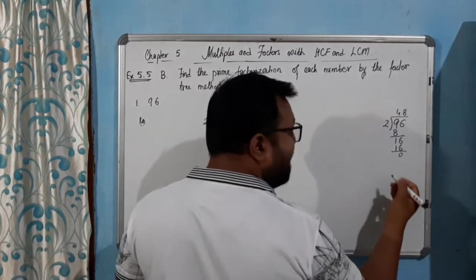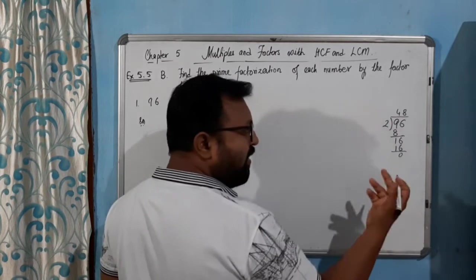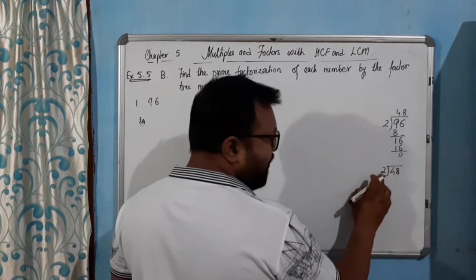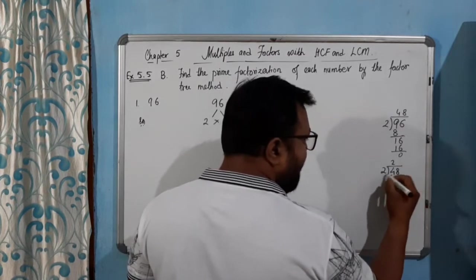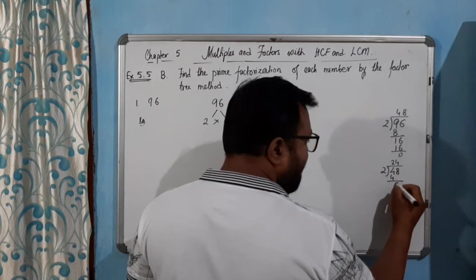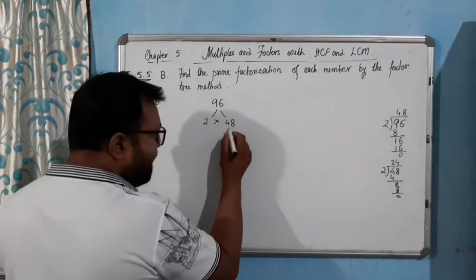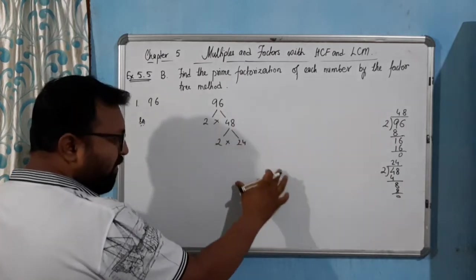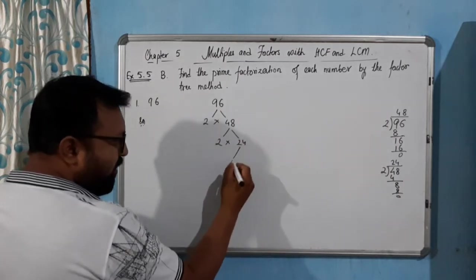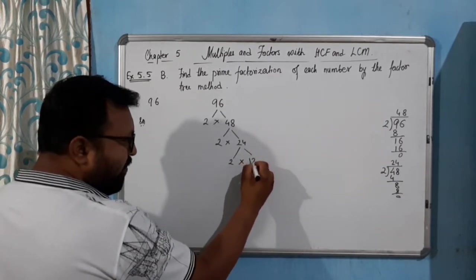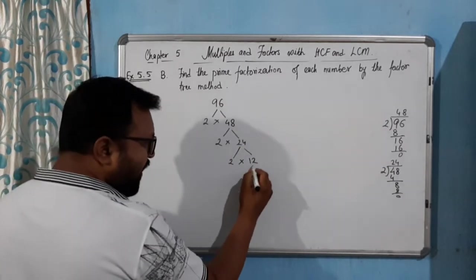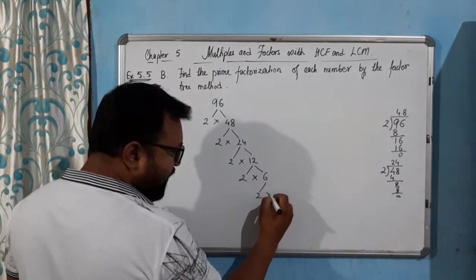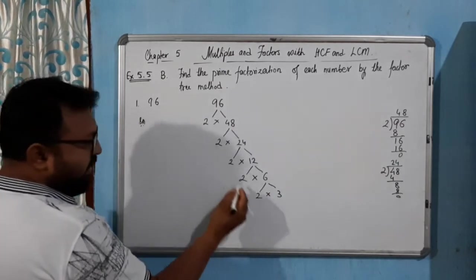Again 48 is there. Suppose you are still confused or forget the table — simply go again by 2, the smallest prime number. So 2 into 24. Then 2 into 12. Again, even, so 2 into 6. And you know 6: 2 into 3. So this is the factor 3 at the end.